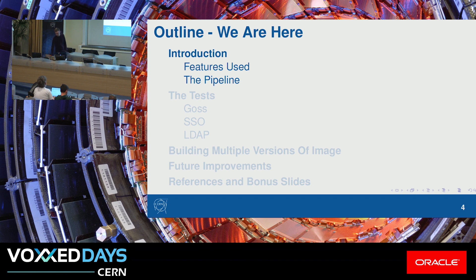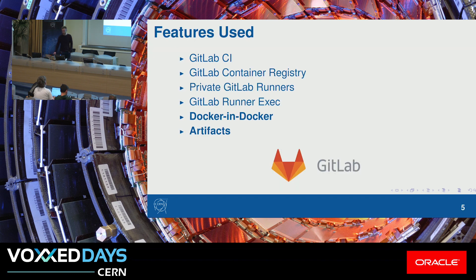Firstly, the features used. We're using GitLab CI in conjunction with the GitLab Container Registry, so we write the code for the image in GitLab, and we test it in GitLab CI, and we deploy it to GitLab Container Registry. So everything is in GitLab, and we can host the image close to the test, which is amazing.